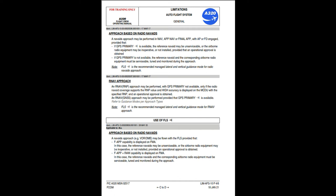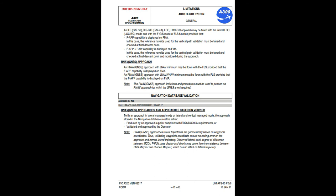RNAV of RNP approach: an RNAV/RNP approach may be performed with GPS primary not available only if the radio navaid coverage supports the RNP value and high accuracy is displayed on the MCDU with the specified RNP, and an operational approval is obtained. RNAV GNSS approach may be performed provided that GPS primary is available. Note: FLS is the recommended managed lateral and vertical guidance mode for RNP approach. Use of FLS approach based on radio navaids: a navaid approach, for example VOR/DME, may be flown with the FLS provided that FAB capability is displayed on FMA; in this case the reference navaid may be unserviceable or airborne radio equipment may be inoperative or not installed, provided an operational approval is obtained.